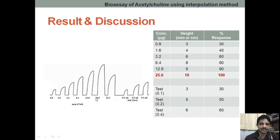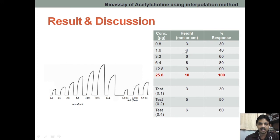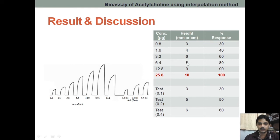Whenever we are taking the CRC, this particular experiment has already been performed. To find the percentage response, you first write the concentration, then measure the height. Whichever is the highest — say 10 is the highest — you directly write that as 100%. So if 10 is 100%, then 9 is 90%, 8 is 80%, 6 is 60%, and like that we find the percentage response.